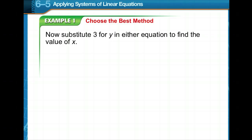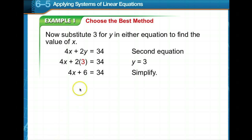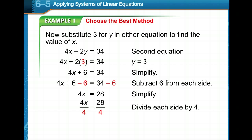So now all we need to do is substitute a 3 in place of y in either of the equations. Here we're choosing the second equation. So notice in place of y there's a 3. So we have 4x plus 6, because 2 times 3 is 6, is equal to 34. Subtract 6 from each side. It leaves us with 4x is equal to 28. Divide both sides by 4. x is equal to 7. The solution is 7, 3.